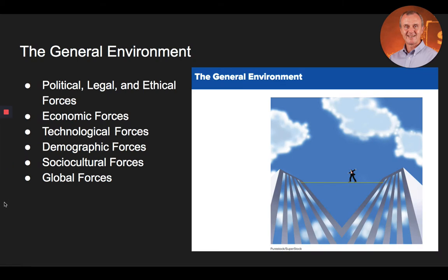Let's look at the general environment for organizations. The general environment includes six forces that have an indirect effect on both the organization and its task environment. These include political, legal, and ethical forces, economic forces, technological forces, demographic forces, socio-cultural forces, and global forces.